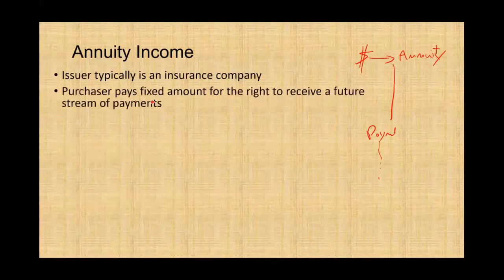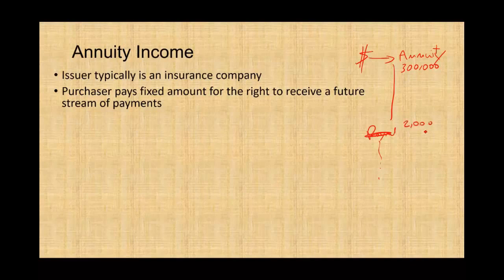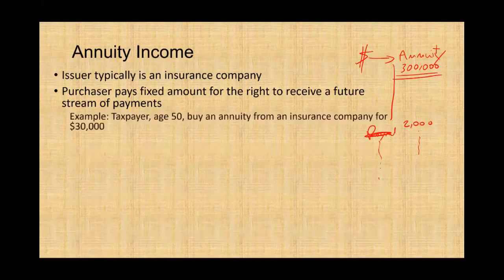The purchaser pays a fixed amount for the right to receive a future stream of payments. So today, you might have $300,000. You invest everything, and the insurance company would say every year for life we'll give you $2,000. So you invest $300,000 with them and they'll give you $2,000. Now the insurance company is going to invest this money and earn a return on it.